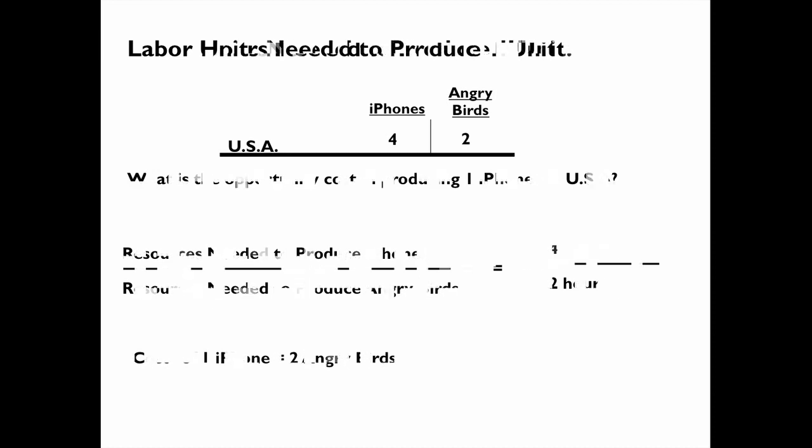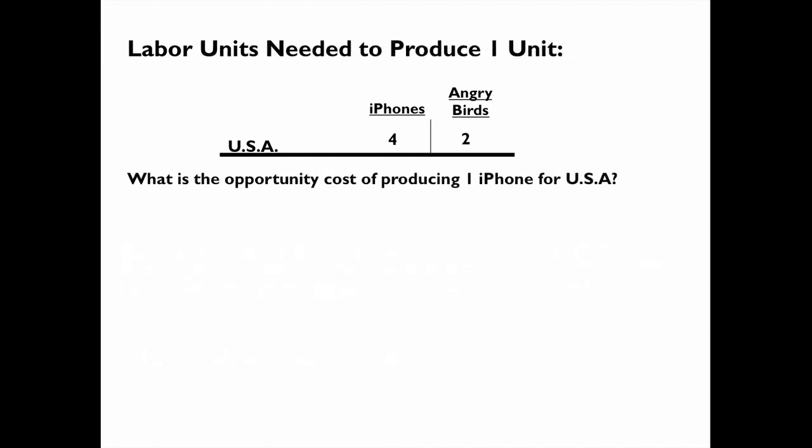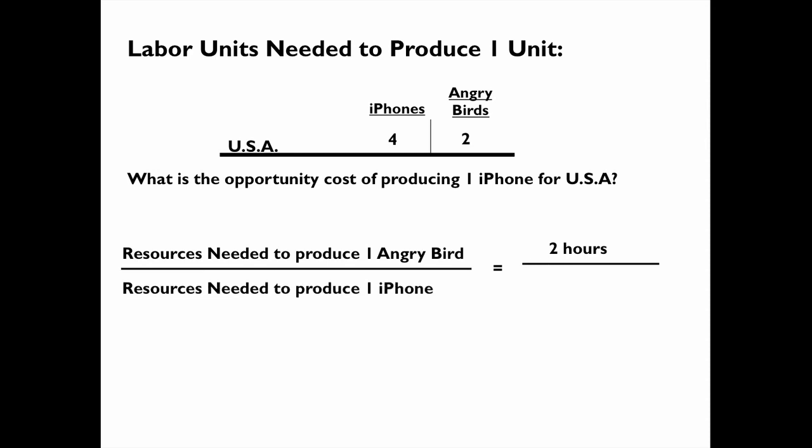We calculate the opportunity cost of Angry Birds in the same way. It takes them 2 hours to produce an Angry Bird, and it takes them 4 hours to produce an iPhone, so the opportunity cost of producing one Angry Bird is half an iPhone. In the 2 hours that it takes in the US to produce an Angry Bird, they could have actually produced half an iPhone if they had used those 2 hours to produce an iPhone.